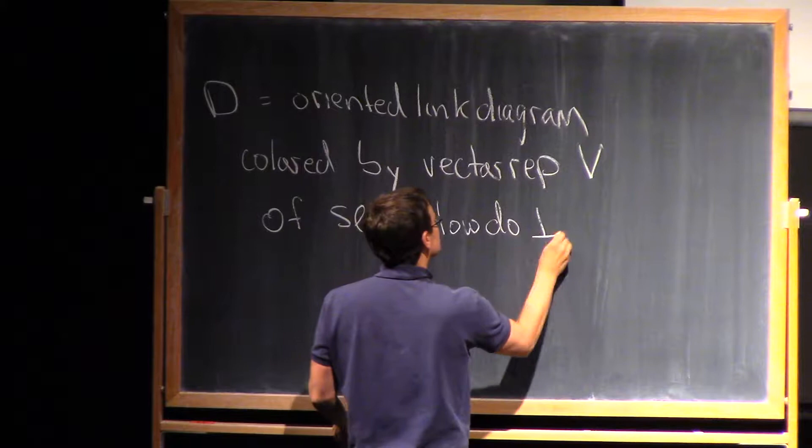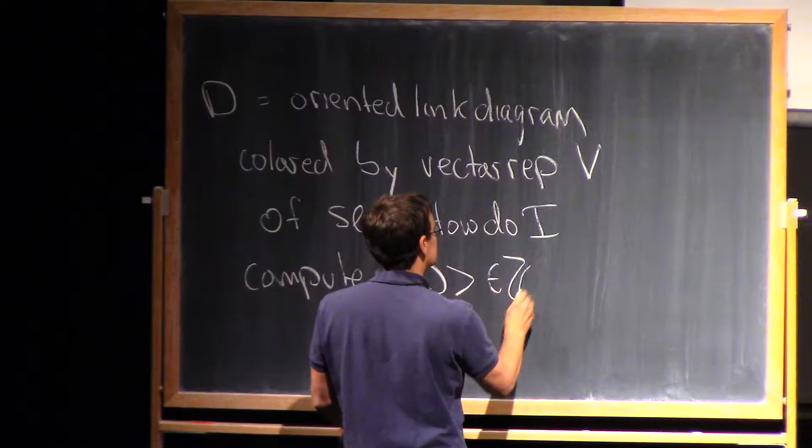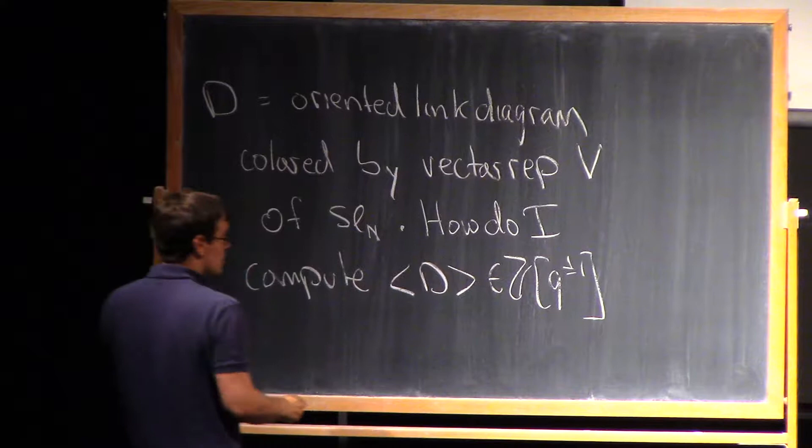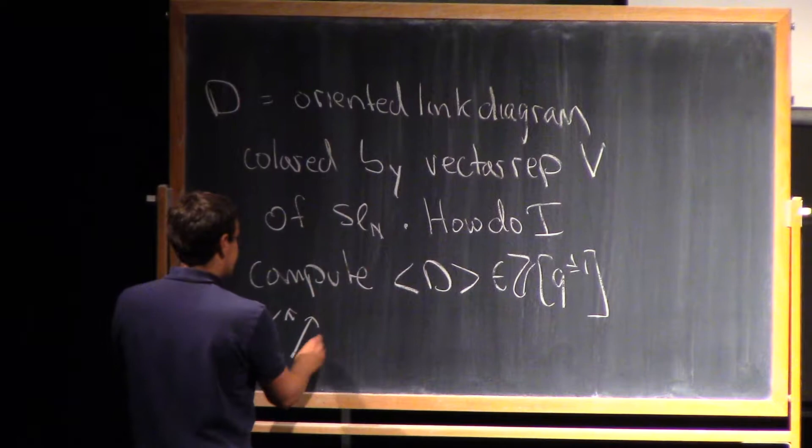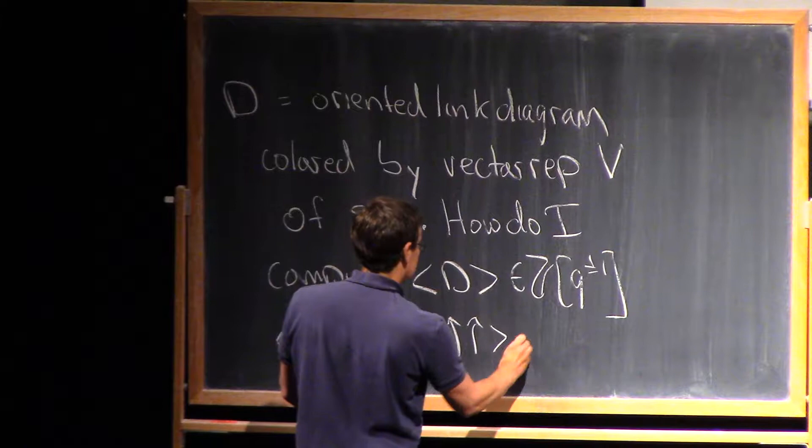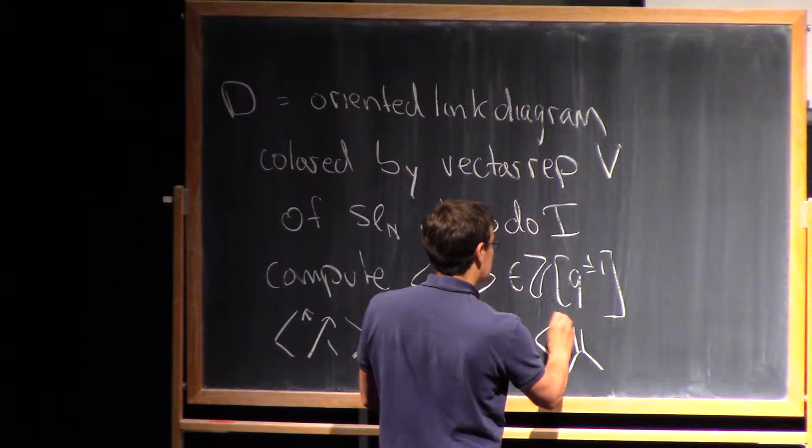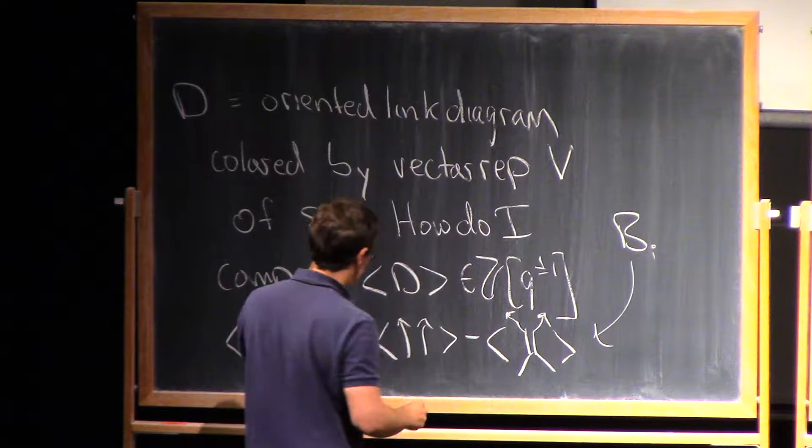So how do I compute a bracket of D? That'll be a polynomial. And remember, what we saw in the last lecture is that we have a relation that looks like the bracket of this is Q times the bracket of this minus the bracket of this little diagram with a thick edge, which corresponded to the element B-I in the Hecke algebra.